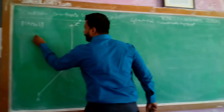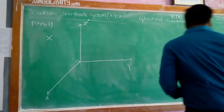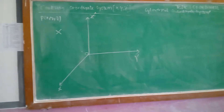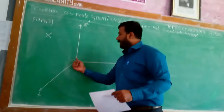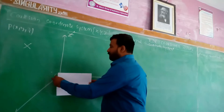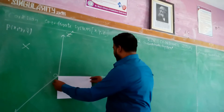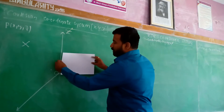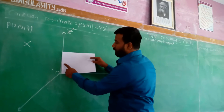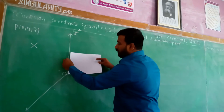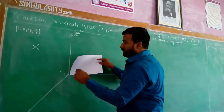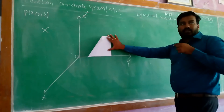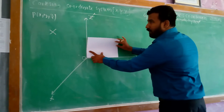Coming to the definition of x: x is the perpendicular distance from the y-z plane. So if you plot the point (2, 3, 4), x equals 2, which is the distance from the y-z plane on the x axis or parallel to the x axis.